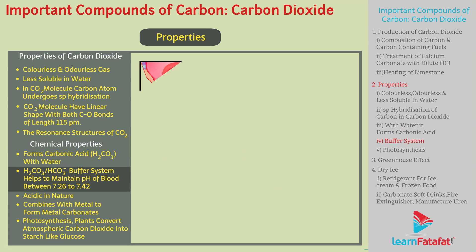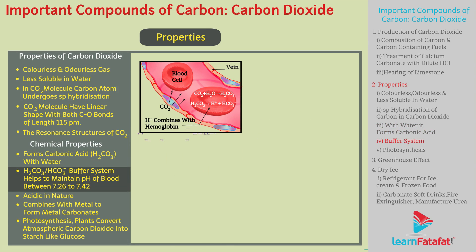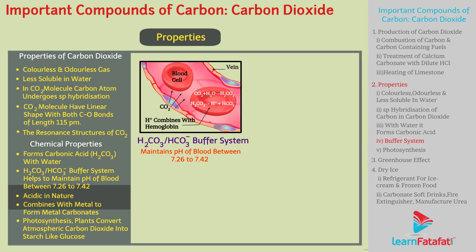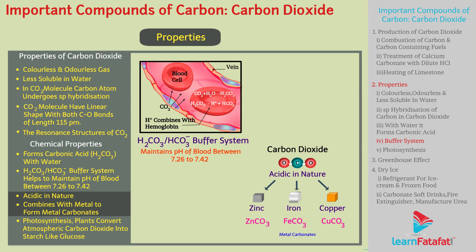It is the H₂CO₃ or HCO₃⁻ buffer system that helps to maintain the pH of blood between 7.26 to 7.42. Since carbon dioxide is acidic in nature, it combines with metals to form metal carbonates.